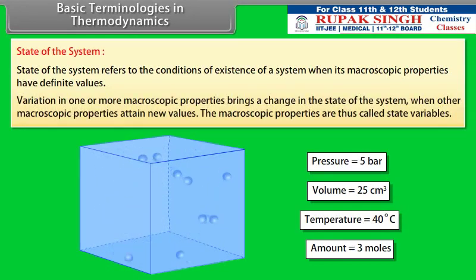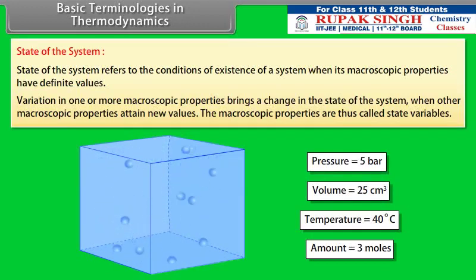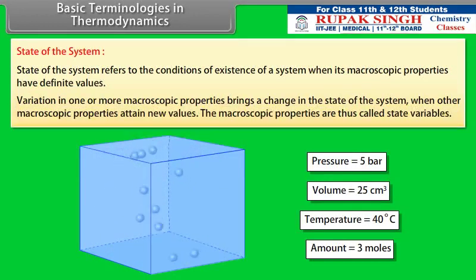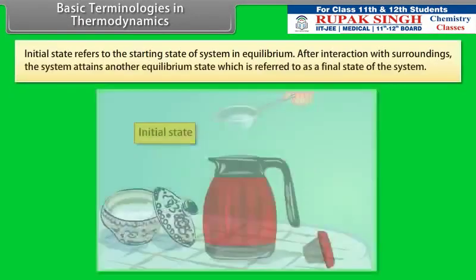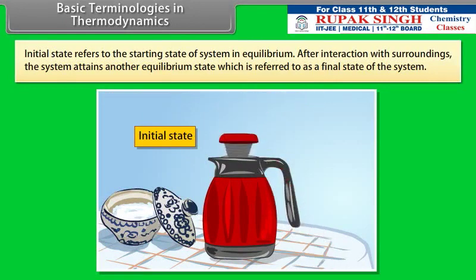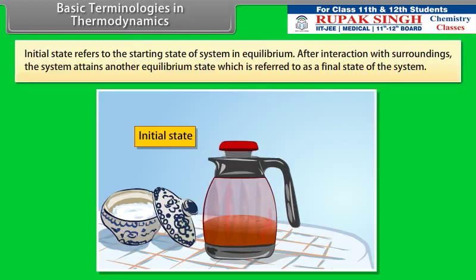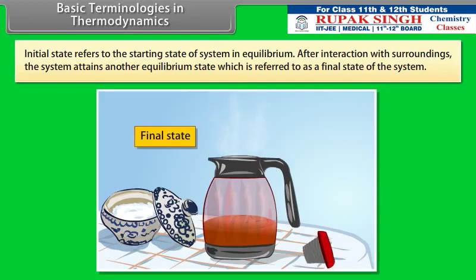Once these minimum numbers of macroscopic properties are fixed, the other properties automatically acquire definite values. Variation in one or more macroscopic properties brings a change in the state of the system. The macroscopic properties are thus called state variables. The initial state refers to the starting state of the system in equilibrium. After interaction with surroundings, the system attains another equilibrium state, referred to as the final state.